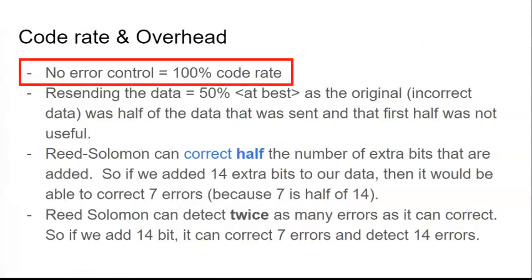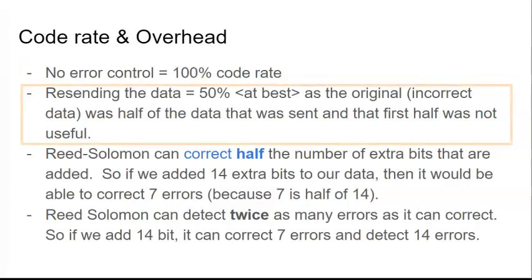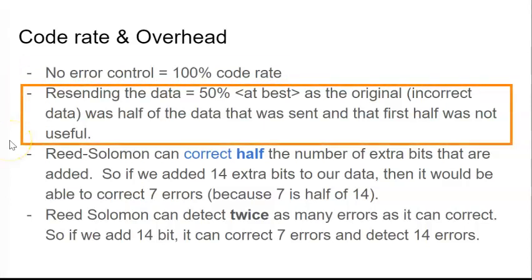If we have no error control, then our code rate is 100%. If we use ARQ, automatic repeat request, then our code rate is 50% at best, because the original incorrect data was half of the data that was sent, and that first half was not useful.